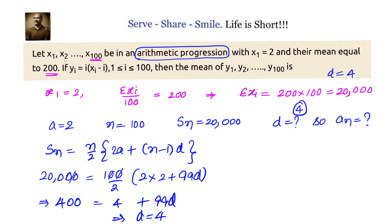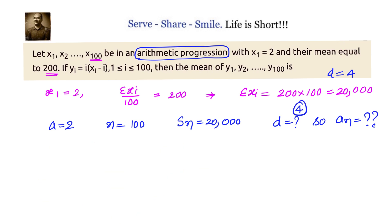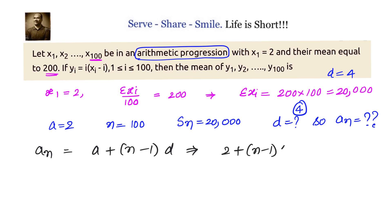So the arithmetic progression starts at 2 with common difference 4, giving 2, 6, 10, 14 and so on. Now we need to find an, the nth term, because an is nothing but xi. The nth term is given by a plus n minus 1 into d, which is 2 plus n minus 1 into 4, giving us 4n minus 2.